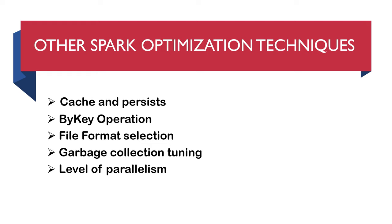Garbage collection tuning is another optimization technique. JVM garbage collection can be a problem when you have a large collection of unused objects. The first step is to collect statistics by choosing the verbose option when submitting a Spark job. In an ideal situation, keep garbage collection overhead less than 10% of heap memory, since Spark jobs run on the JVM platform.